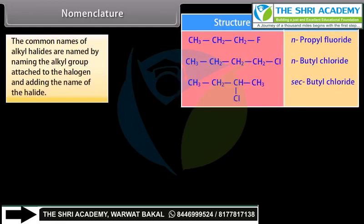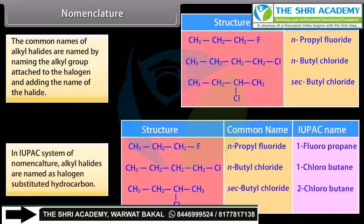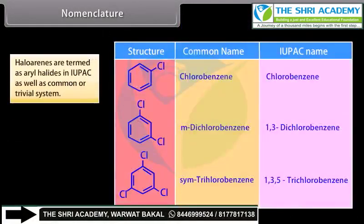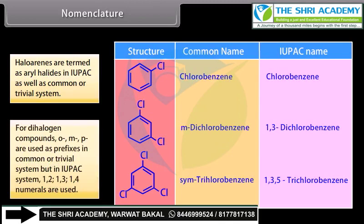The common names of alkyl halides are derived by naming the alkyl group attached to the halogen and adding the name of the halide. In the IUPAC system of nomenclature, alkyl halides are named as halogen-substituted hydrocarbons. Haloarenes are termed as aryl halides in both IUPAC and common or trivial systems. For dihalogen compounds, ortho, meta, and para are used as prefixes in the common system, but in IUPAC, 1-2, 1-3, and 1-4 numerals are used.